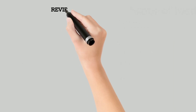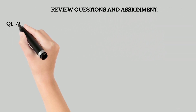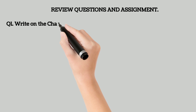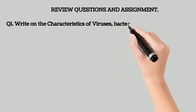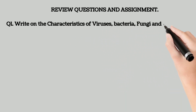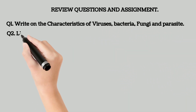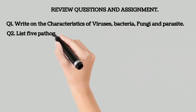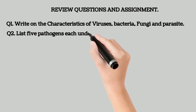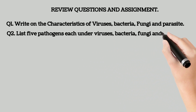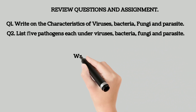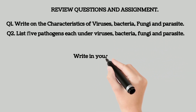Review and assignment questions. Q1: Write on the characteristics of viruses, bacteria, fungi and parasites. Q2: List 5 pathogens each under viruses, bacteria, fungi and parasites.